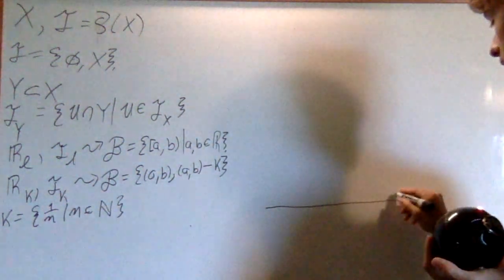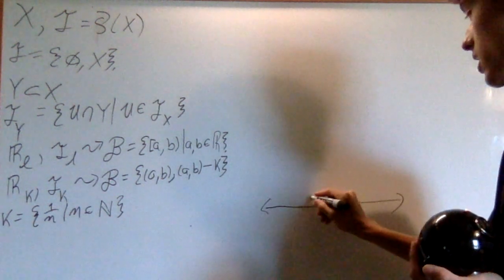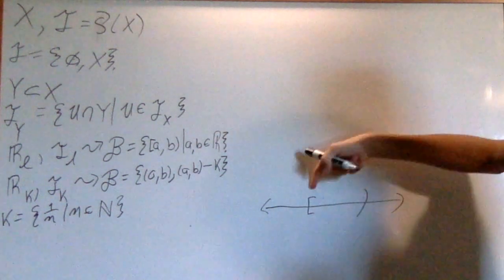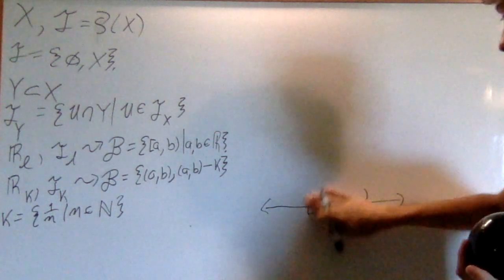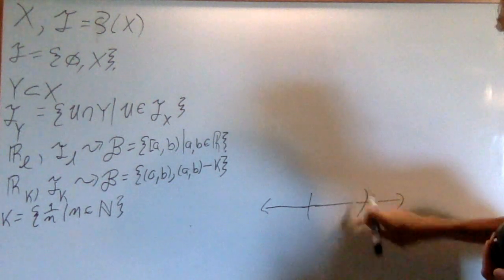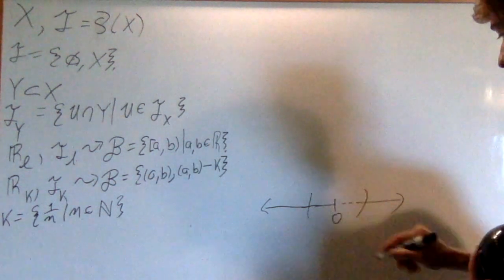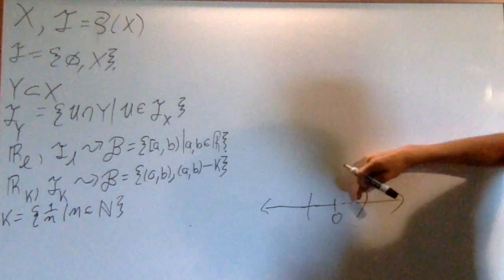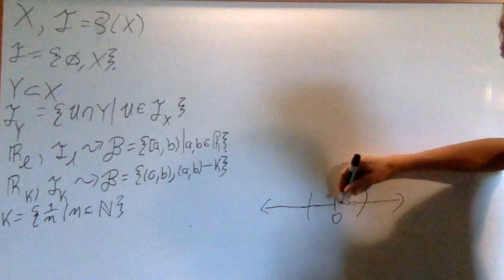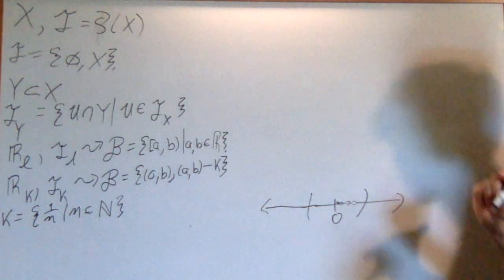So if I'm on the real line, the L topology is where I take lower bounds like this. But the K topology, it'll still be normal. However, I can remove just 1 over the integers. Say this is 0 right here, there's going to be a series of 1 over integers that I can remove that just slowly approach 0. So it'll be like that.